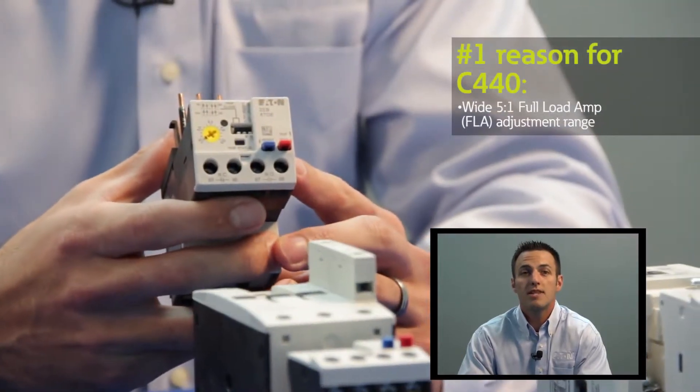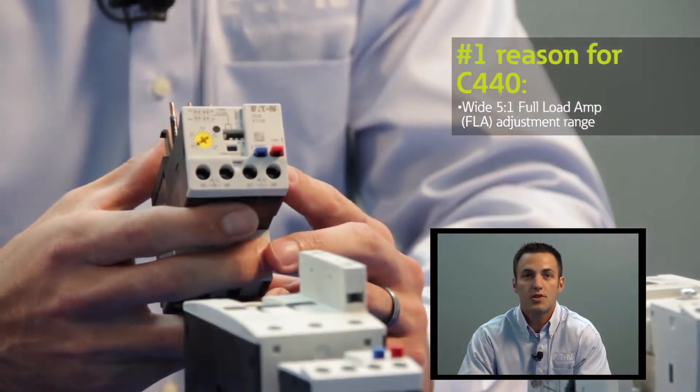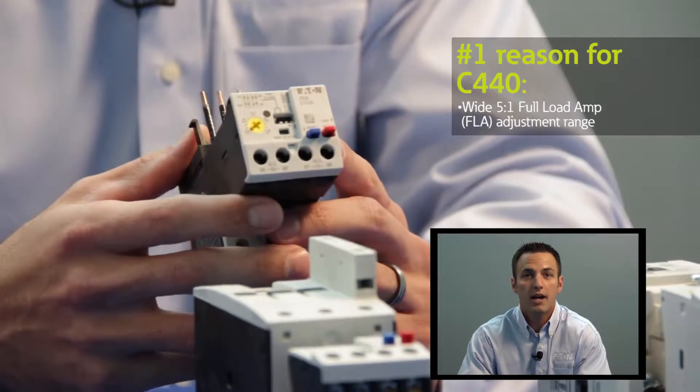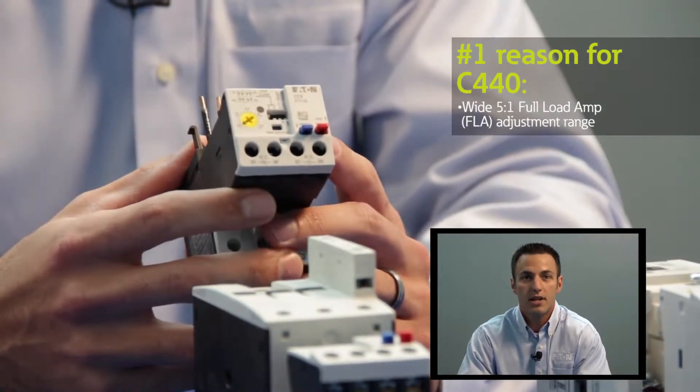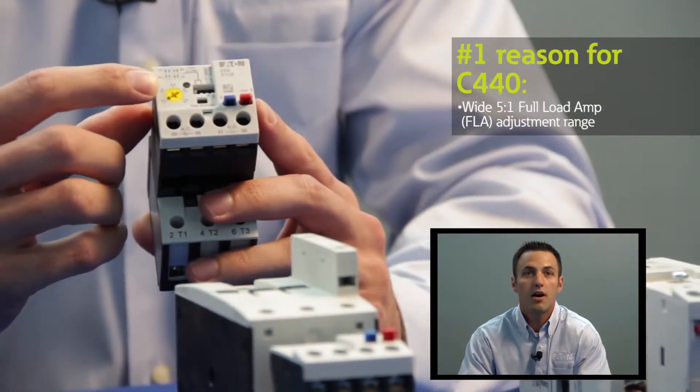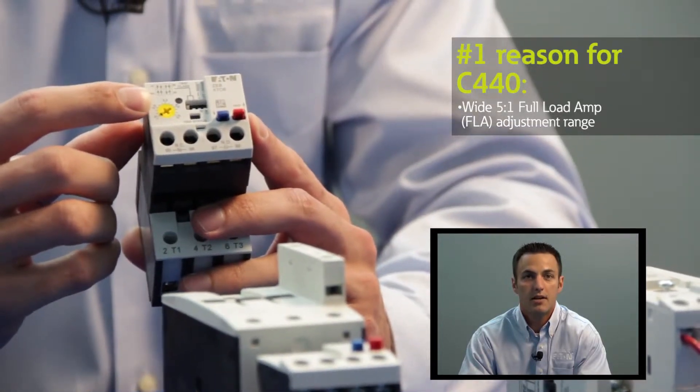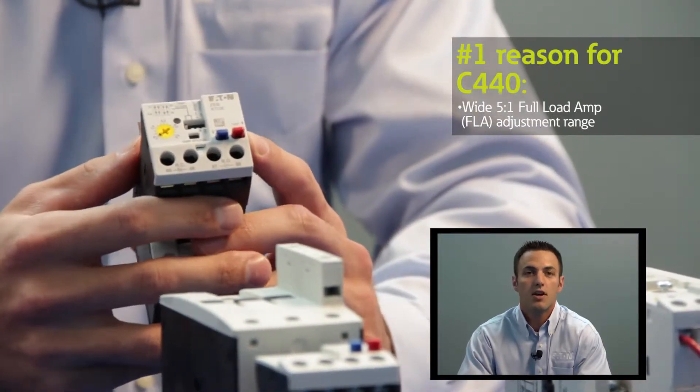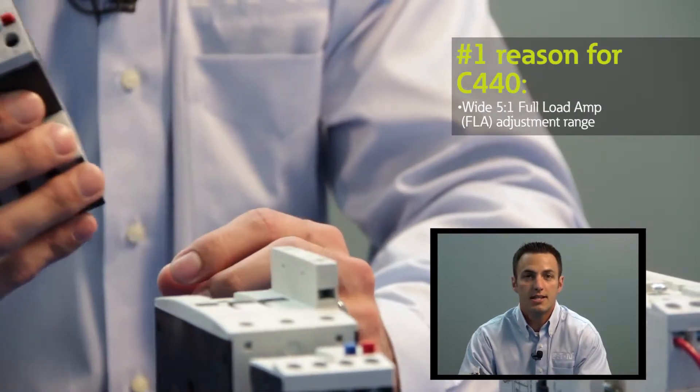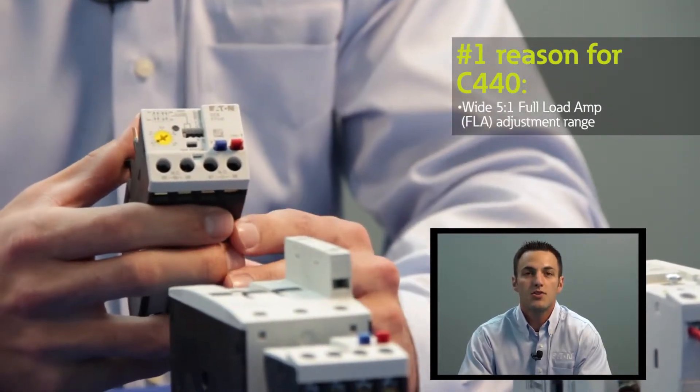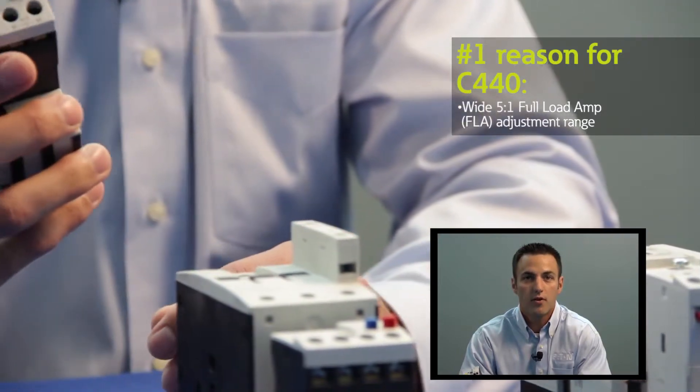Unlike traditional bi-metallic overloads that require the user to purchase separate heater packs matched to the exact application, the C440 offers a large 5 to 1 full load amp adjustment setting such as 4 to 20 amps or 20 to 100 amps in a single device. This allows you to cover a much larger set of applications with a single overload.